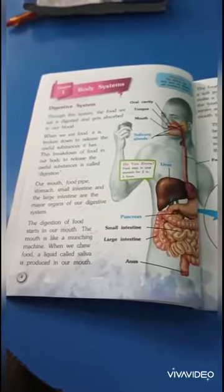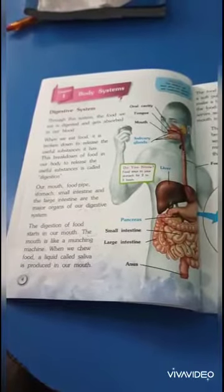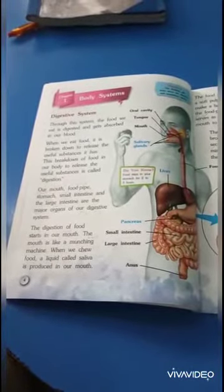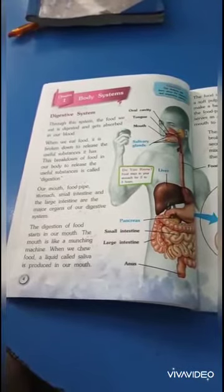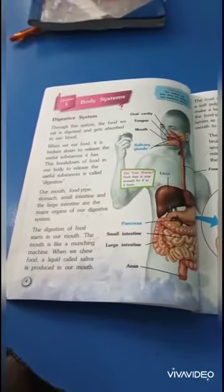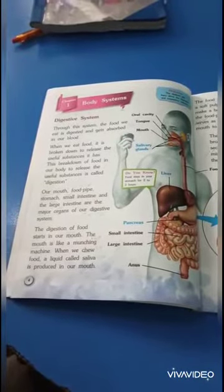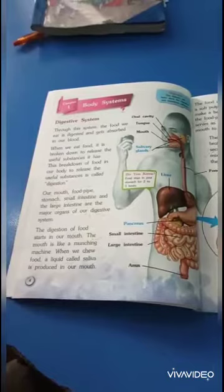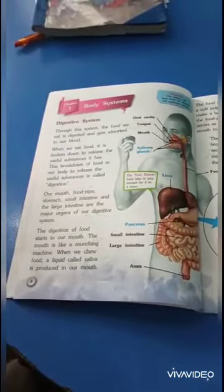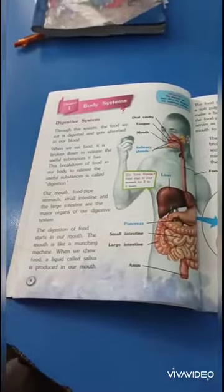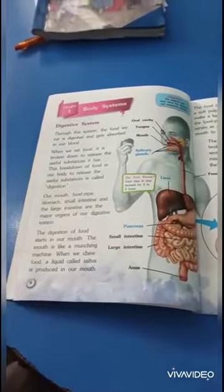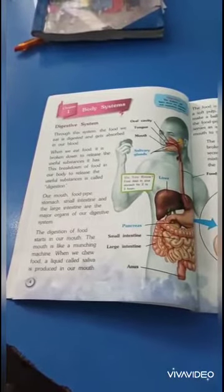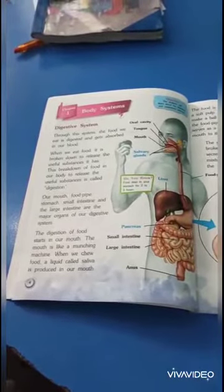The digestive system — through this system the food we eat is digested and gets absorbed in our blood. When we eat food, it is broken down to release the useful substances it has. This breakdown of food in our body to release the useful substances is called digestion.